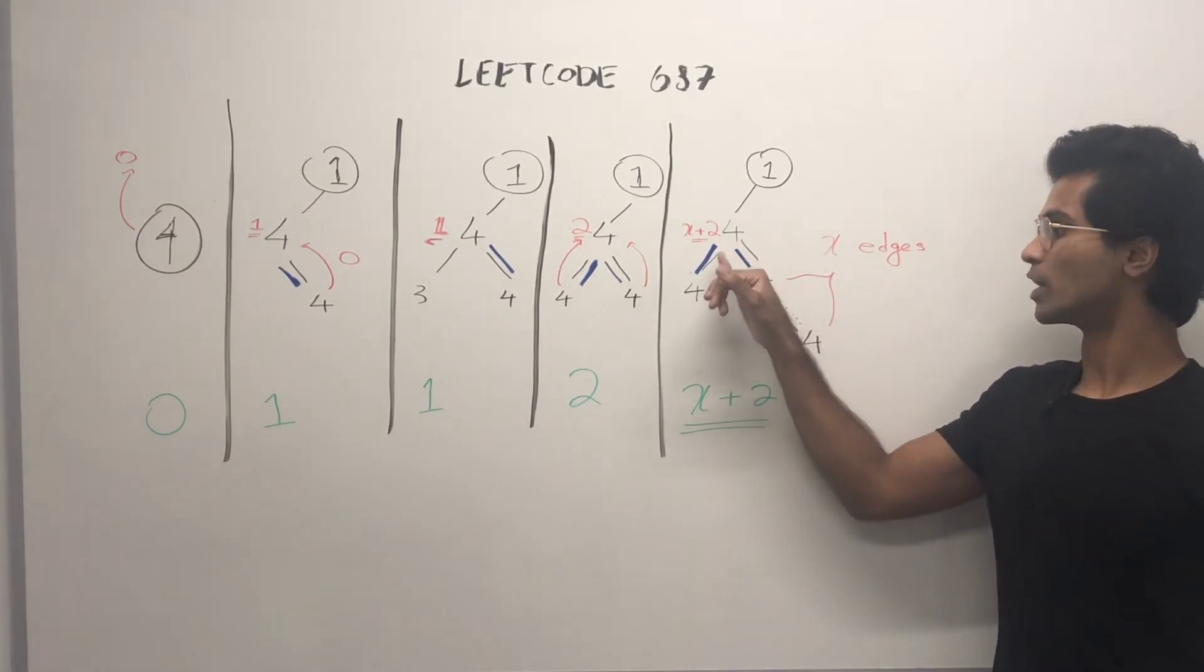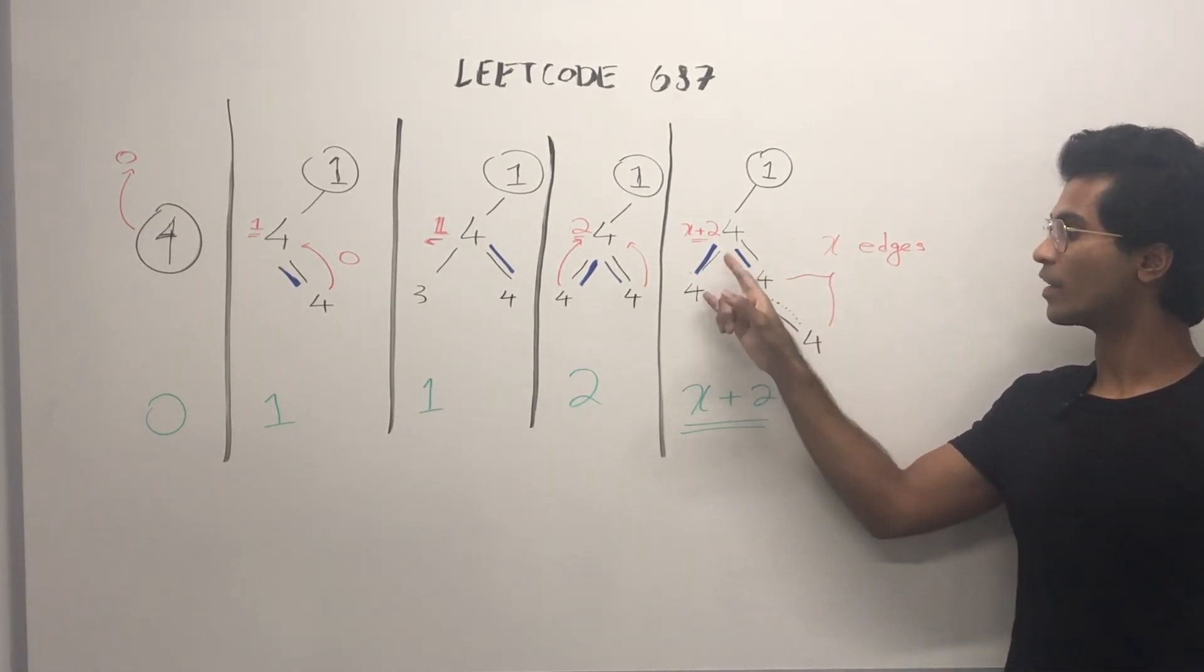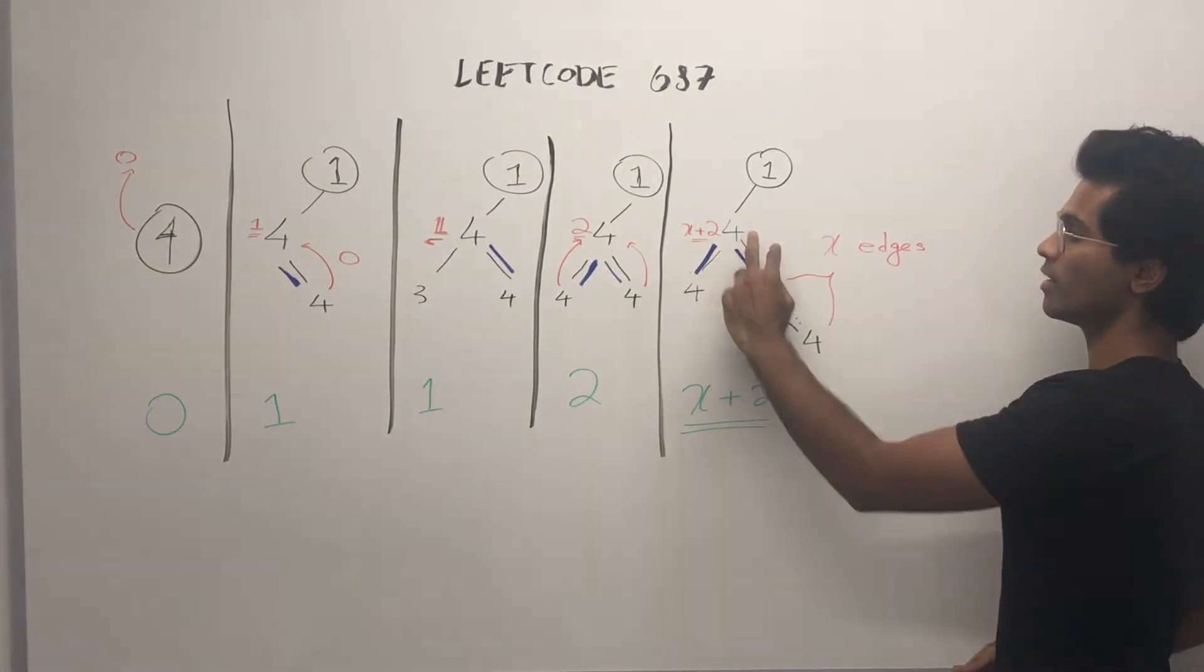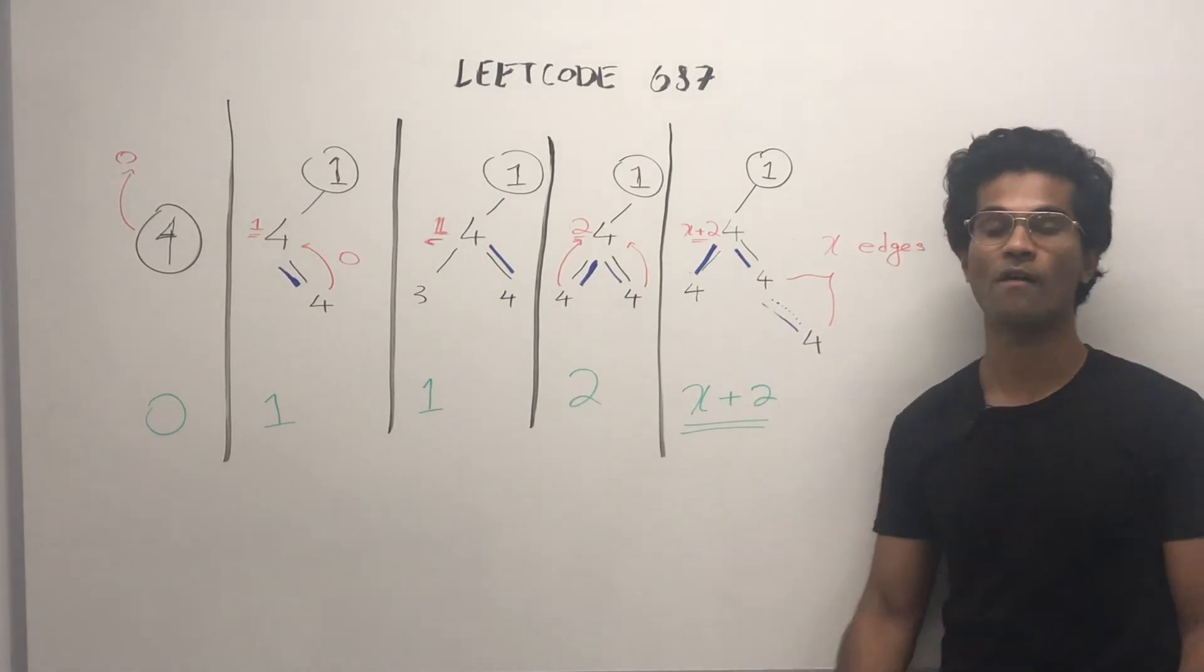Then this parent is going to check its left child and see that they're the same so it's going to add one more. So it's going to be 1 plus 1 plus x for a total of x plus 2.